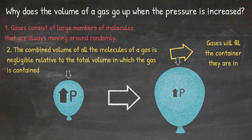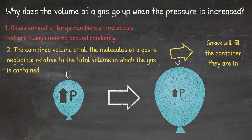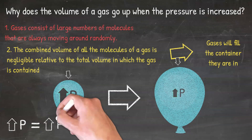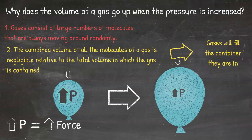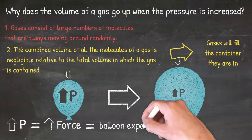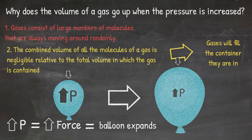Relating this back to kinetic molecular theory: the gas molecules are all moving around randomly and will fill the container. When the pressure of the gas molecules on the inside of the balloon is increased, they are pressing on the inside surface with more force. Because they are pushing with more force than the gas molecules outside, the balloon is able to expand — the volume of the balloon goes up.